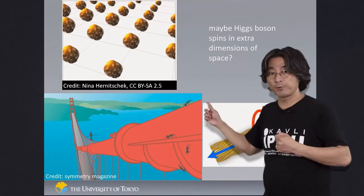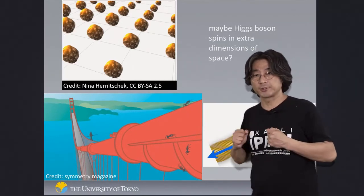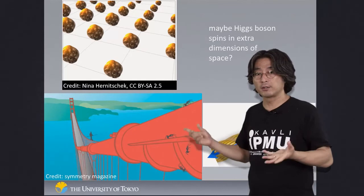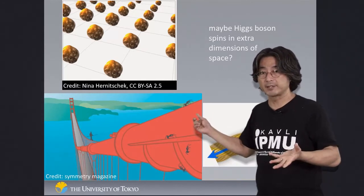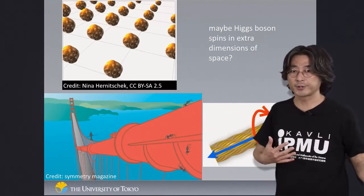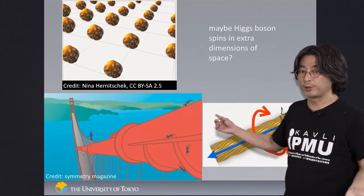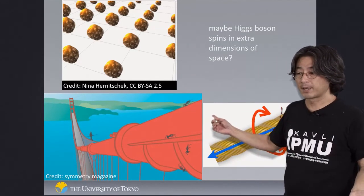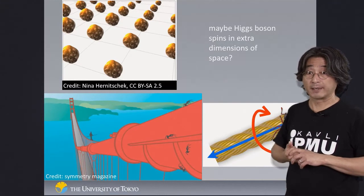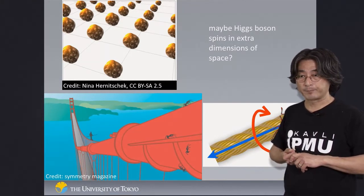Small things can see more dimensions to space. Maybe the Higgs boson actually sees an extra dimension — it's spinning in that direction instead of our familiar directions, but we don't see it. Maybe that's why we think the Higgs boson is spinless and faceless and kind of spooky.